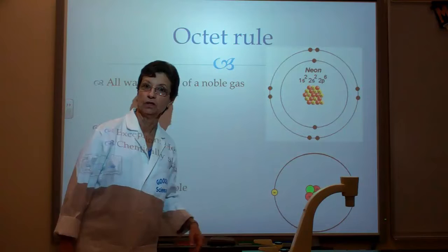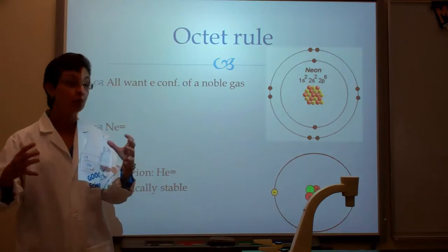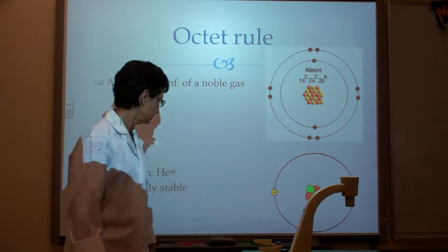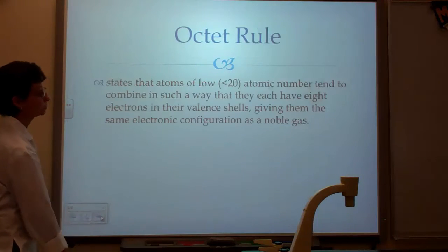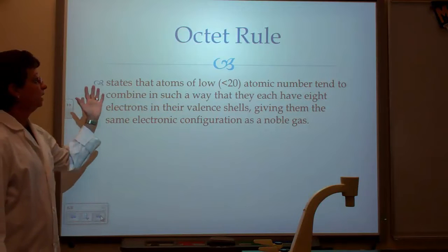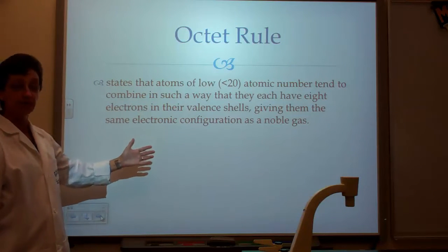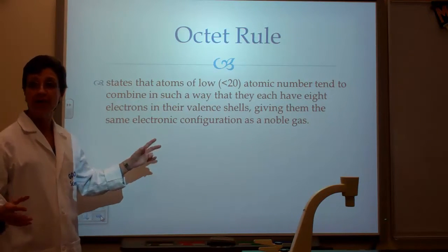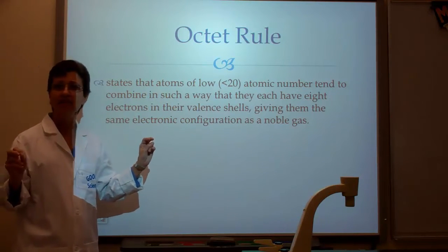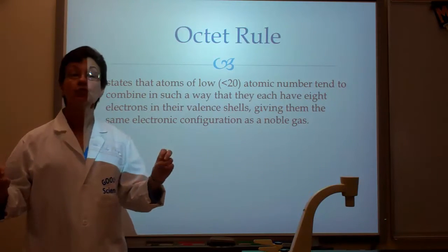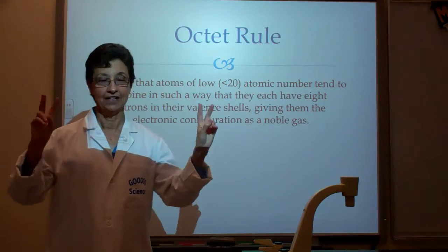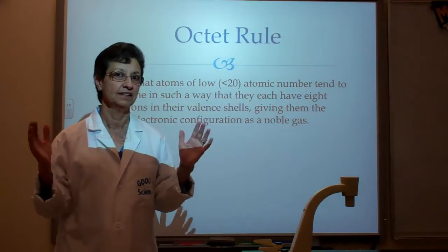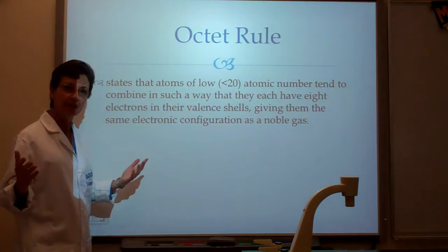Helium only has two. So small atoms want to achieve a configuration just like helium. Now that we've talked about the octet rule, here's the definition. Pause and write down the definition so that you know that basically what all this says is that all atoms want to achieve a noble gas configuration. Most of them want to have eight electrons in the outermost energy level. And how do they do this?